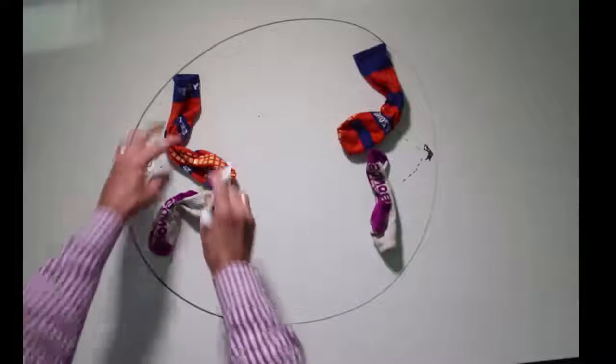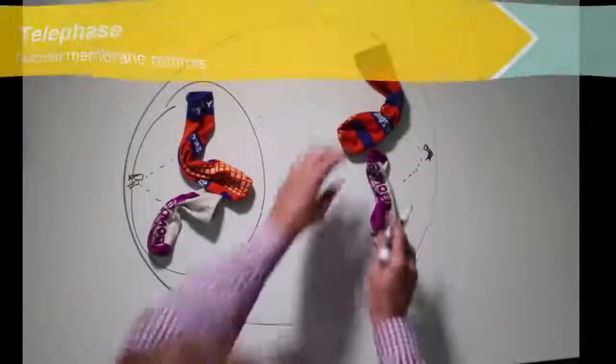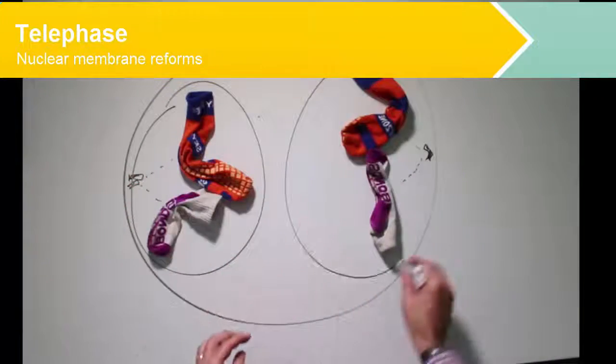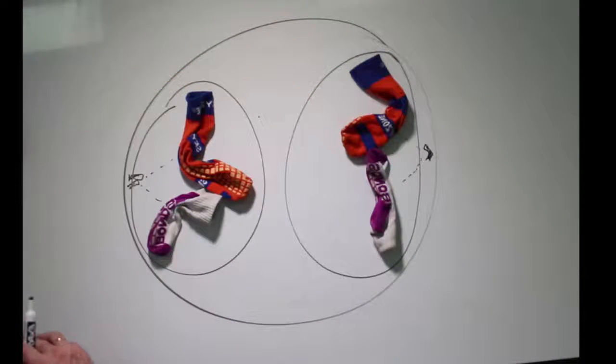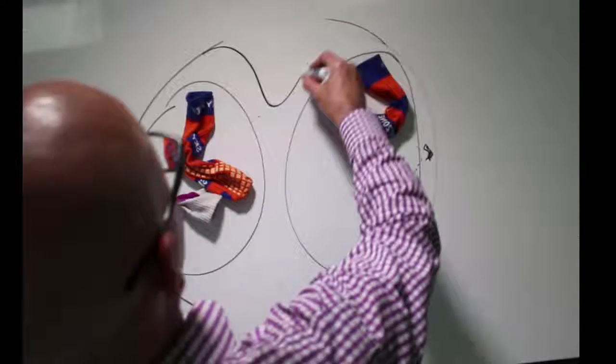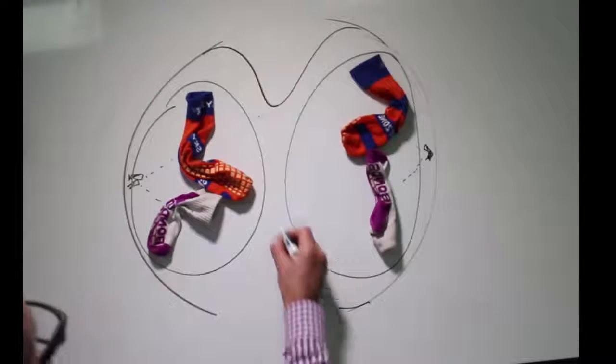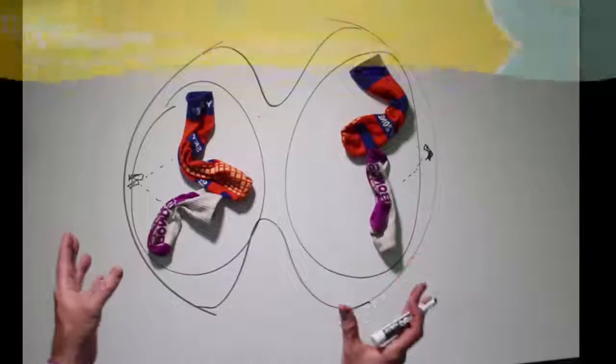Then we have telophase where nuclear membranes reform around the DNA. Straight after that we go into a process called cytokinesis where the cell membrane pinches here in the middle and continues to pinch until we've got two daughter cells.